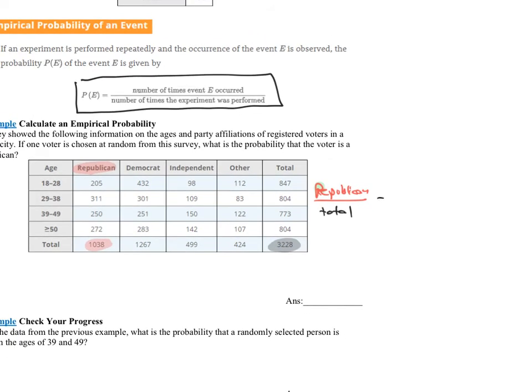If I wanted to calculate this empirical probability, I would take what we wanted, the Republicans, which was 1,038. I would divide that by the total, which was 3,228. Again, here, what I could do, I could simplify this as a fraction. Go ahead and do that now. Now I'm getting 173 over 538.